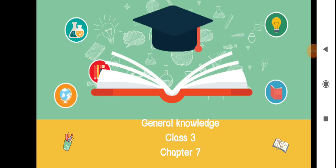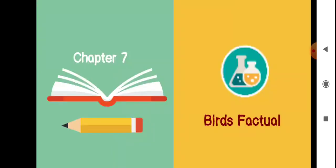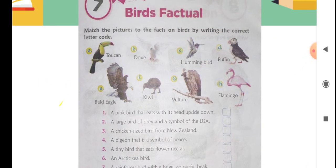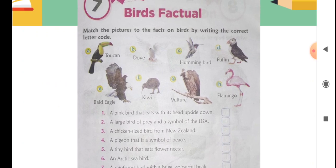A very good morning to each and every student of class third. We will proceed to a new chapter — Chapter 7. This is from the book Knowledge Heap, and the chapter name is 'Birds Factual.' We will learn facts about birds. In this chapter, you have to match the picture to the fact on birds by writing the correct letter code. There are different birds labeled a, b, c, d, e, f, g, h.